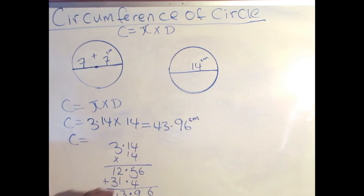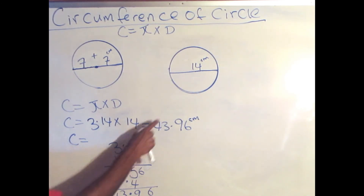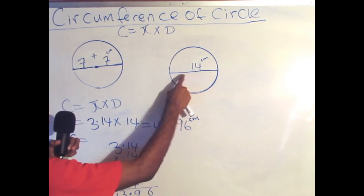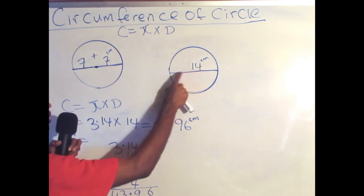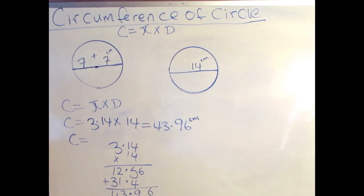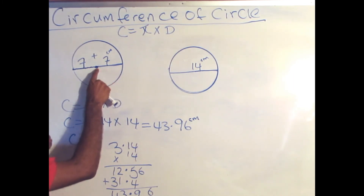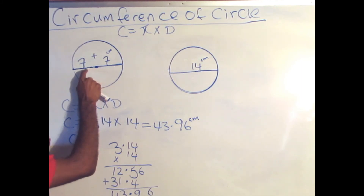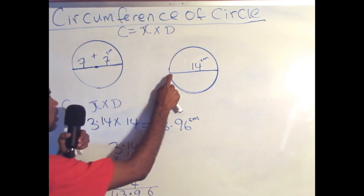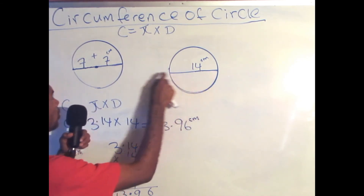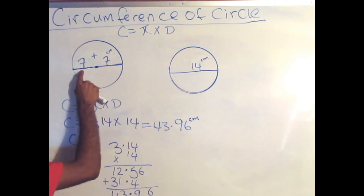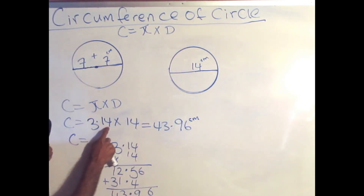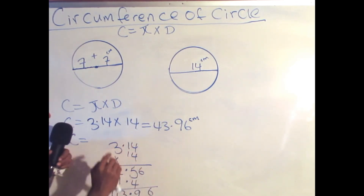If you realize, solving with the full diameter gives the same answer, because this is the diameter through the center of the circle. Using 3.14 or 22 over 7 times 14 gives the same result. Remember: if you're finding the circumference of a circle and they give you the radius, just double it. So in this case, 7 plus 7 is 14, and 3.14 times 14 is 43.96.